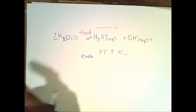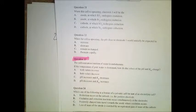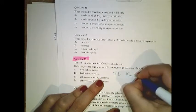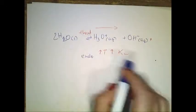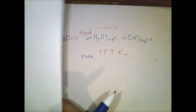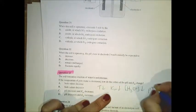The self-ionization of water is endothermic. As temperature increases, Le Chatelier's principle says the equilibrium shifts forward, so Kw increases. If temperature decreases, Kw decreases — the equilibrium shifts back, concentration of H3O+ decreases, and pH increases. So as you decrease temperature: Kw decreases and pH increases.